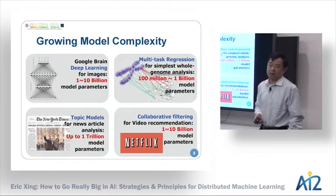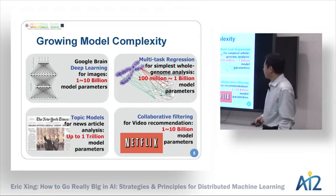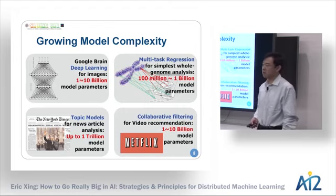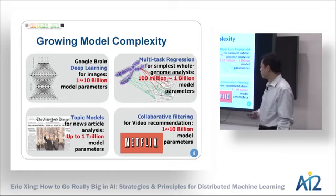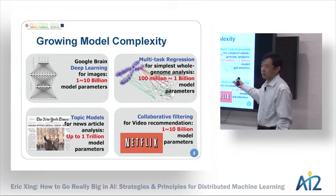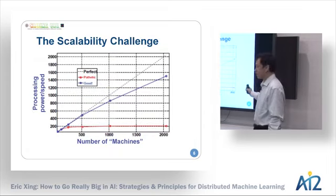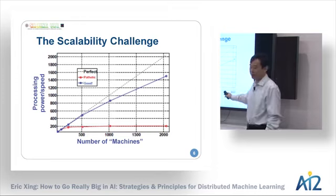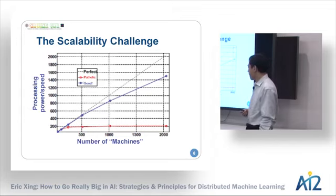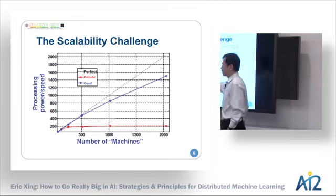You need to bring in complex models — a commonality of all these models is that they all have a lot of parameters. They are so big they often run out of the memory of a single machine; they can be a billion or even a trillion parameters. Our goal is to answer how to make it happen correctly. We want to see a linear increase of computing power as we add more machines to keep up with the need for large models and large data.